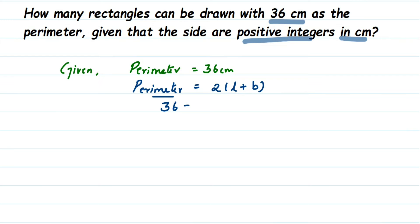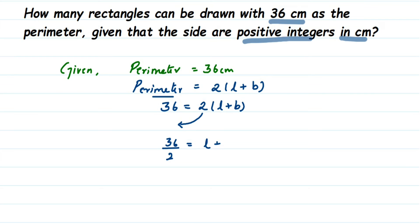So 36 equals 2 into (L plus B). I'm not writing units here — just the numbers, with the unit at the end. We want L plus B, so I'm going to transpose the 2 to the other side: 36 divided by 2 equals L plus B. That gives us length plus breadth equals 18 centimeters.